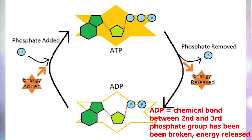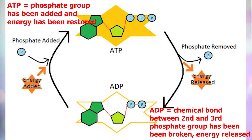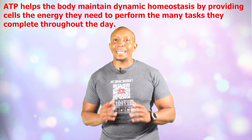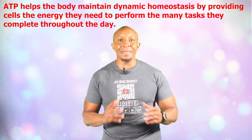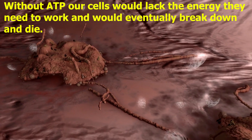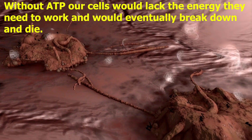Remember: ADP is when the chemical bond between the second and third phosphate groups has been broken and energy has been released. ATP is when a phosphate group has been added and energy has been restored. Basically, ATP helps the body maintain dynamic homeostasis by providing cells the energy they need to perform the many tasks they complete throughout the day. Without ATP, our cells would lack the energy they need to work, which means they would break down and die. Thanks ATP for all of the energy you give our cells to complete their daily functions — we salute you.